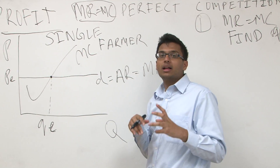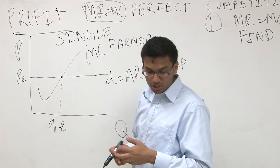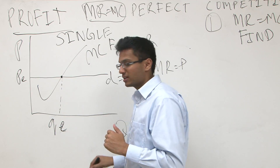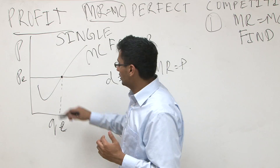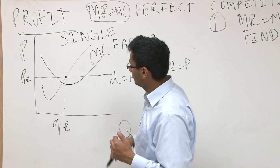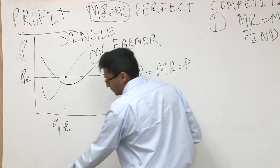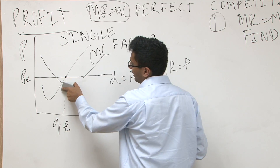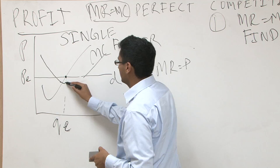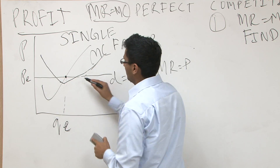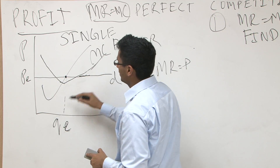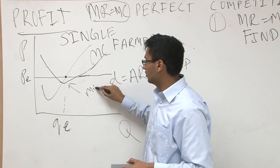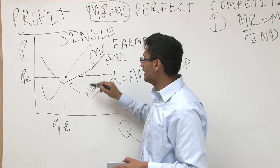Now I'm going to draw an ATC (average total cost) curve. For a profit example, I'll place it below the price level. Graphically speaking, the ATC should always intersect the MC at its minimum point. So this parabola is the ATC curve, and it must intersect MC at that minimum point. We found the quantity equilibrium where MR equals MC — now the key is knowing where you hit the ATC when you drop down.